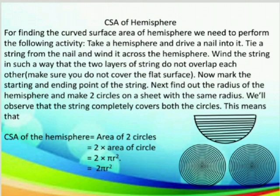We need to remember that in this case also, the curved surface area of the hemisphere is half the surface area of a sphere. We know that the surface area of a sphere is 4π r². So, the curved surface area of the hemisphere would be half of 4π r², which is half into 4π r², that makes 2π r².